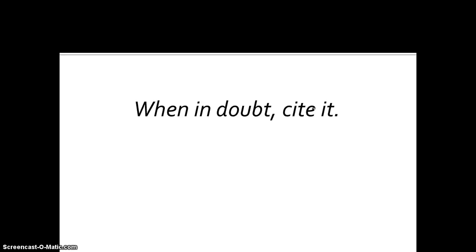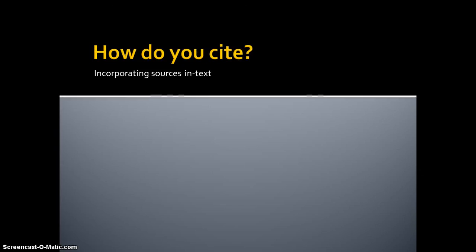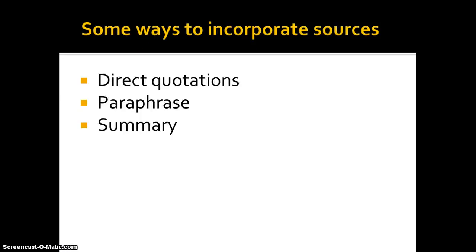Now that we've talked about the whens and the whys, we need to talk about how to cite. It's really important to know exactly how this is supposed to look when you're incorporating your sources in text. There are several ways to incorporate sources: direct quotations, paraphrase, and summary. You should make sure that you're aware of how you use all of those.